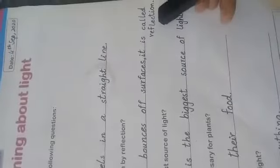What do you mean by reflection? Light can bounce off surfaces. It is called reflection.